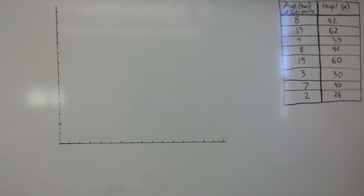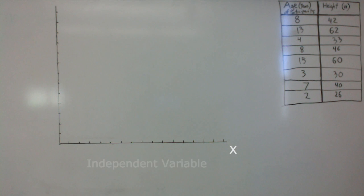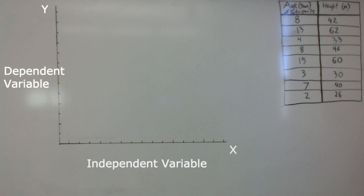Next you'll need to label those axes. Normally the x-axis displays the independent variable and the y-axis shows the dependent variable.